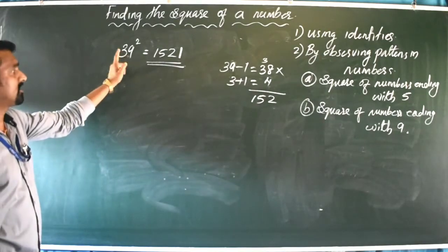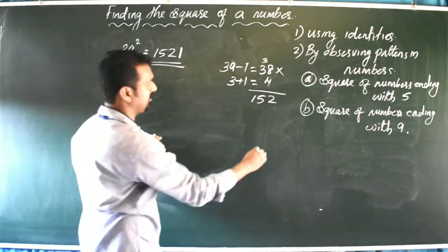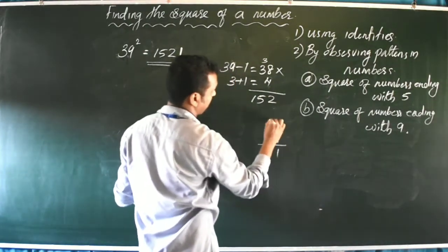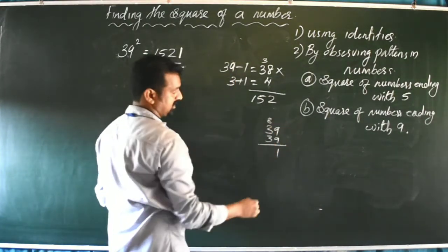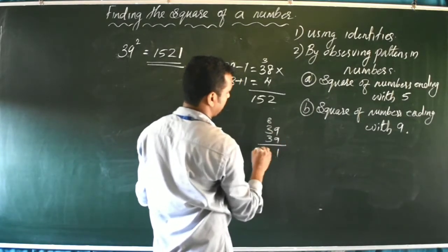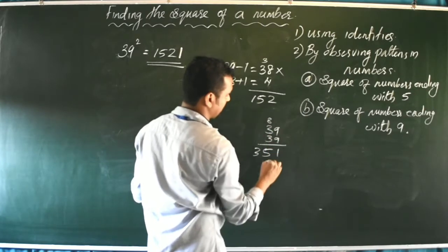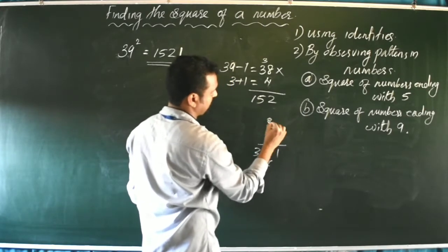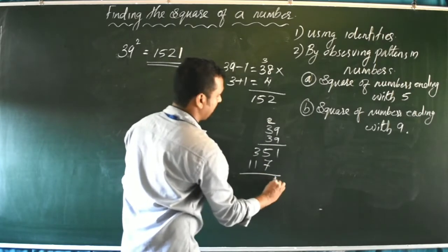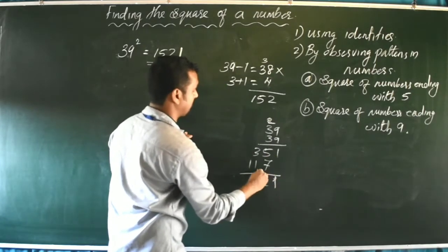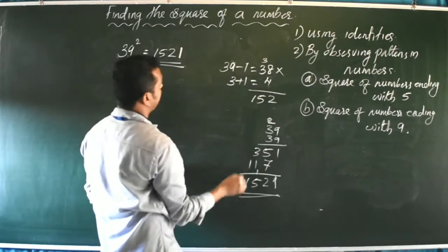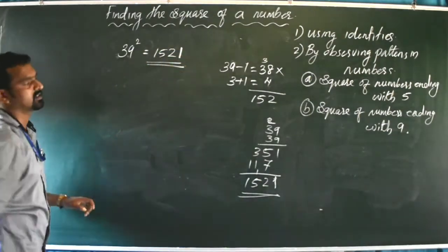We can verify: 39 × 39. Computing directly gives 1521. So the answer is confirmed as 1521.